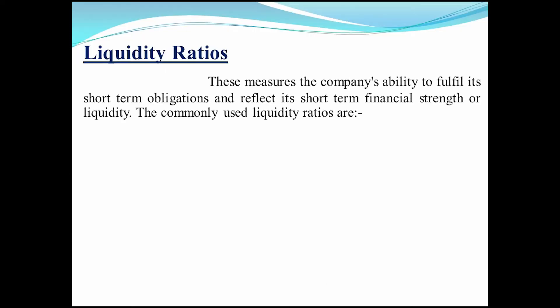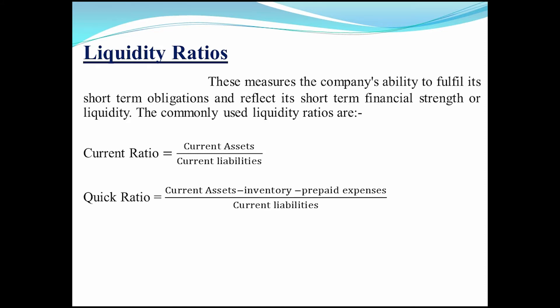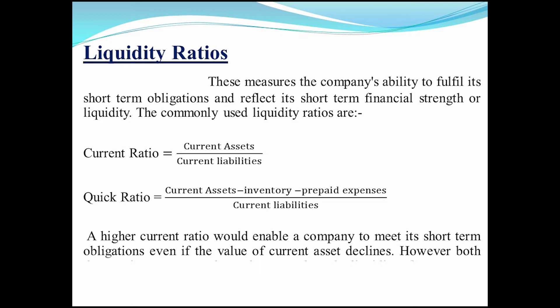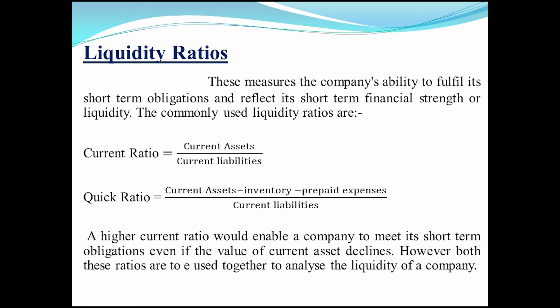The first one is liquidity ratio. These measure the company's ability to fulfill its short-term obligations and reflect its short-term financial strength or liquidity. The common liquidity ratios are current ratio and quick ratio. Current ratio equals current assets divided by current liabilities. Quick ratio equals current assets minus inventory minus prepaid expense, divided by current liabilities. A higher current ratio would enable a company to meet its short-term obligations even if the value of the current asset declines.